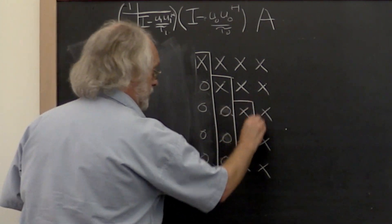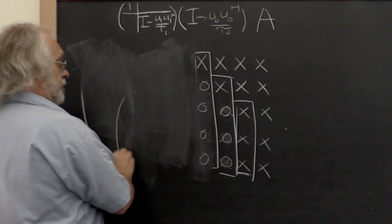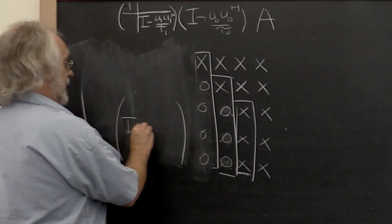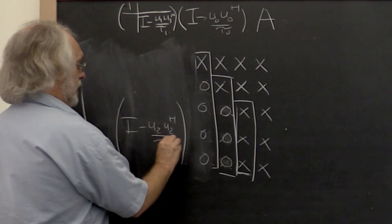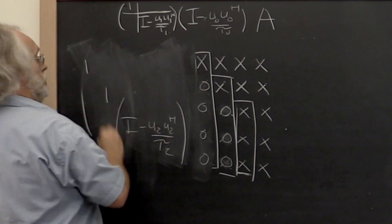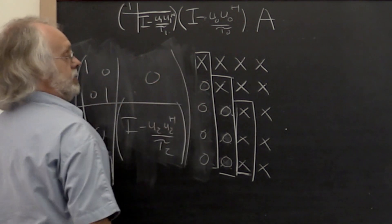And the next step you use this part of the matrix to compute a Householder vector. The Householder transformation then looks like I minus U2 U2 Hermitian transpose over tau2. You would need two ones here and zeros here.